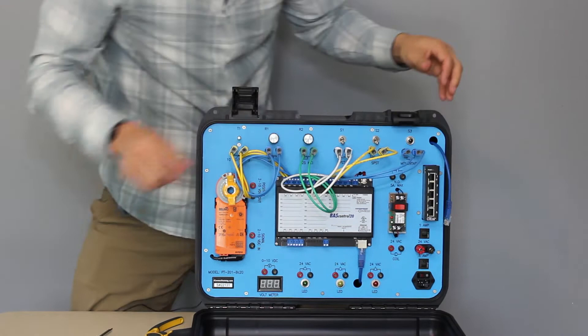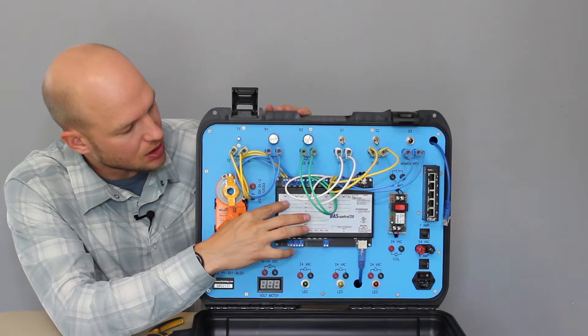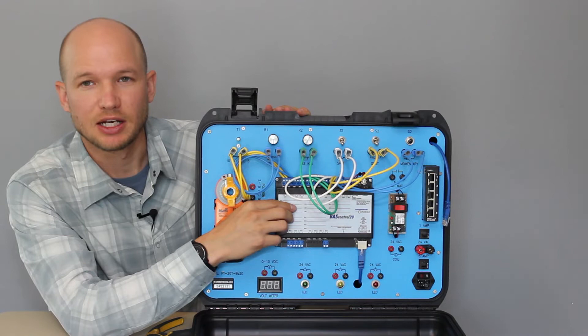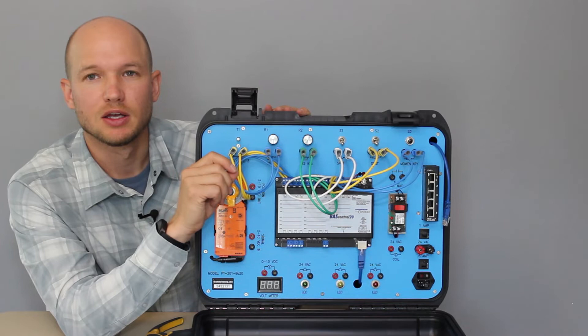One thing that's nice about the controller is that all the inputs and outputs are short circuit protected and over voltage up to 24 volts protected. So let's say you're wiring up the connector and you have one strand that crosses over to the other side. So you're short circuiting A to C, it's not going to burn out or ruin the controller.